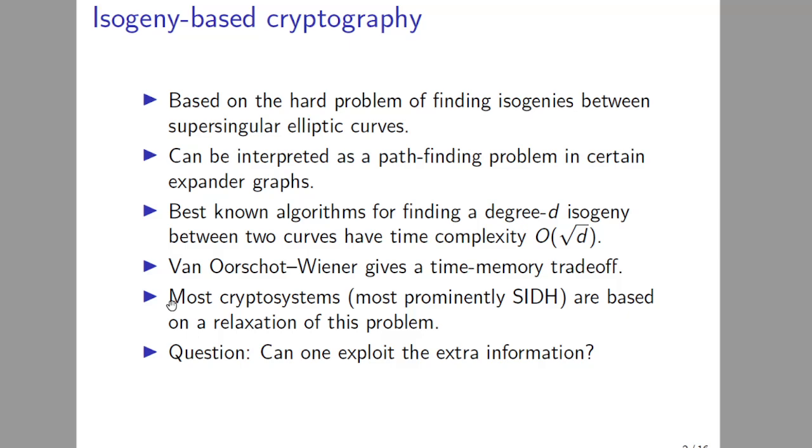This gives an algorithm with time complexity roughly square root of d but requires a lot of memory, and the Van Oorschot-Wiener algorithm gives a time-memory tradeoff. Nevertheless, all known algorithms for this problem are exponential in the size of the input. However, most cryptosystems, most prominently SIDH, are based on relaxations of this problem. So a natural question occurs: can one exploit this extra information to beat generic isogeny algorithms?